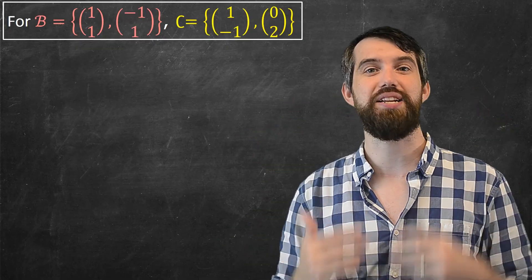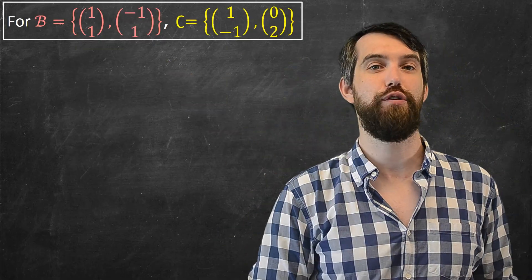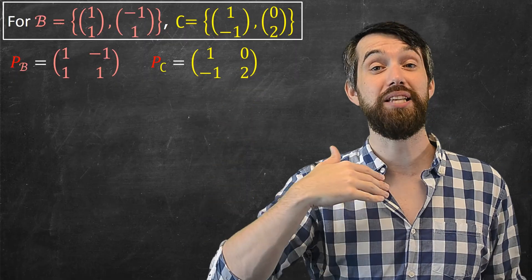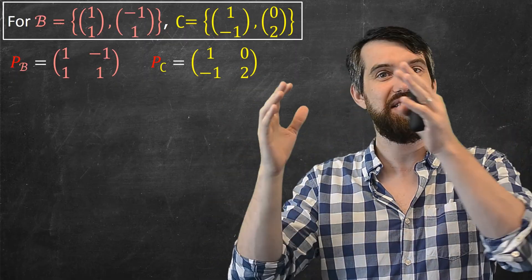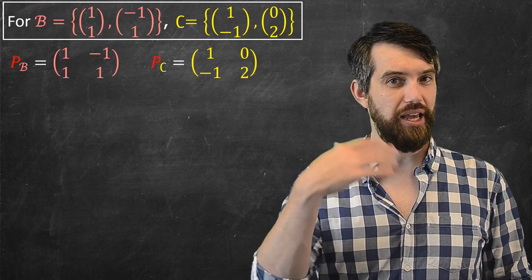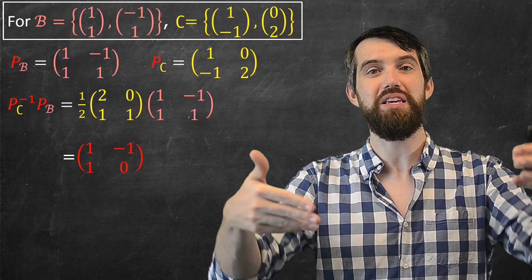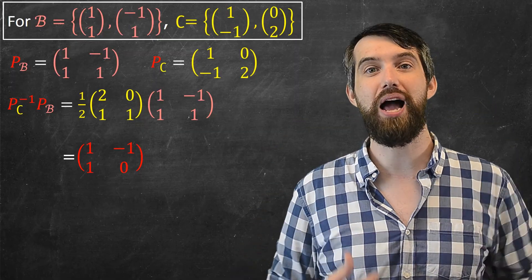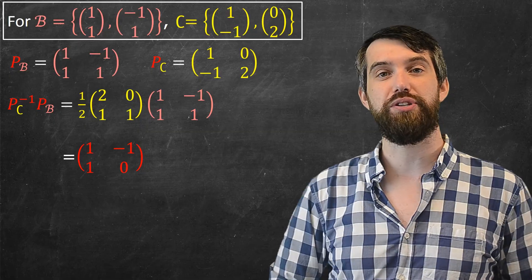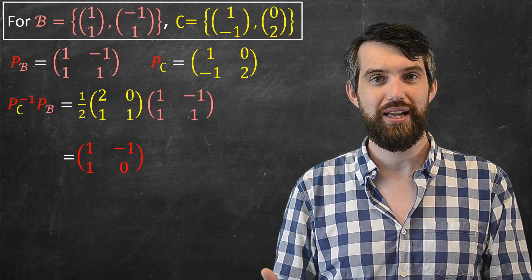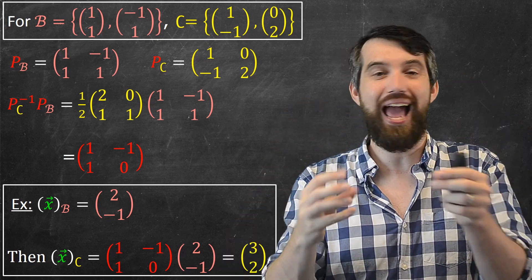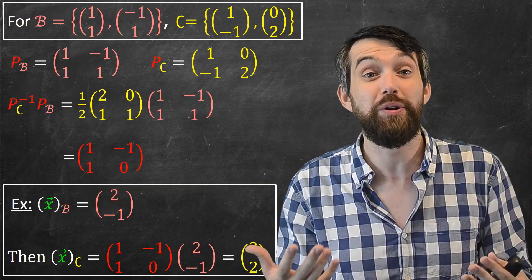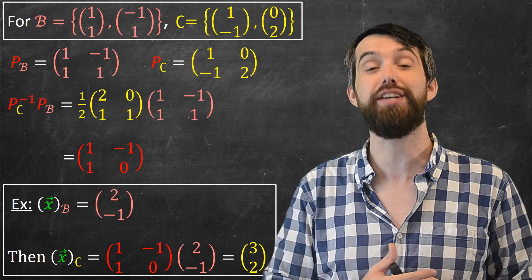Let's see how this works algebraically in an example. Given explicit b and c bases, I get a P_b and a P_c by placing the basis vectors as columns. I then compute P_c inverse times P_b: using the 2×2 inverse trick, I multiply P_c inverse on the left of P_b to get the change-of-basis matrix. For the specific example where x in the b basis is (2, -1) — as seen at the beginning — multiplying by this change-of-basis matrix gives x in the c basis as (3, 2).